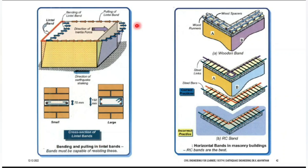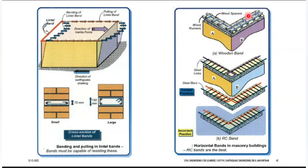Due to push and pull, the band also takes bending — it is capable of resisting these two forces. If you are not using reinforcement and are constructing a gabled structure, you have to introduce wooden spacers — timber connected in both longitudinal and transverse directions. You should have at least two numbers in each direction, and the runner must go in both directions, nailed at equal spacing.